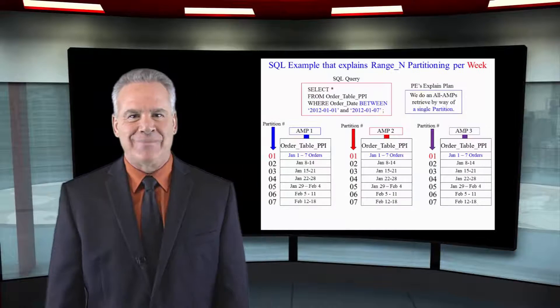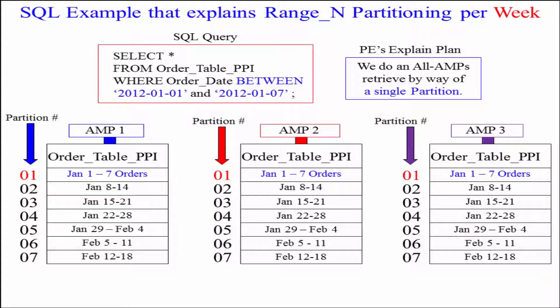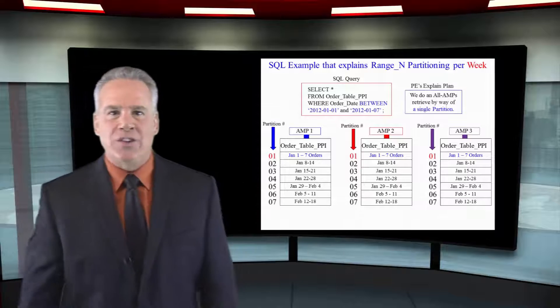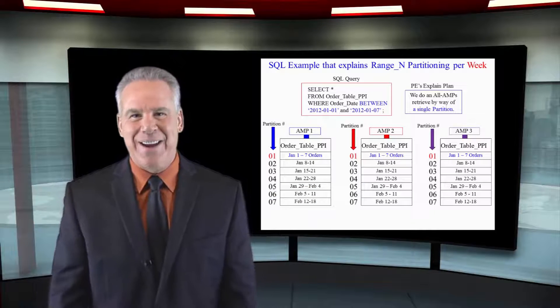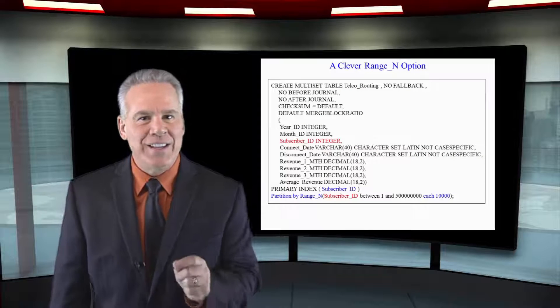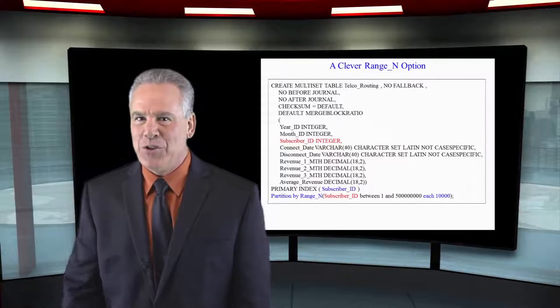When users begin to write queries and say things like SELECT everything FROM the Order_Table WHERE the Order_Date BETWEEN January 1st AND January 7th, as you can see from this example, it's only going to be a single partition across every AMP. This is an excellent example of a partitioning statement.